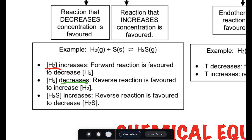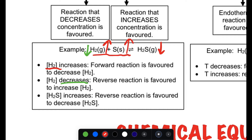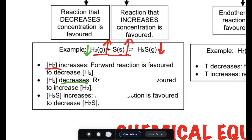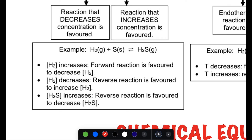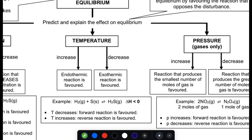For a decrease in concentration of hydrogen, the system will increase hydrogen and also increase the sulfur, which means it will decrease the products. So the system favors the reverse reaction. Similarly, if the concentration of hydrogen sulfide increases, the system opposes that by decreasing hydrogen sulfide and increasing the reactants — so again, the reverse reaction is favored.